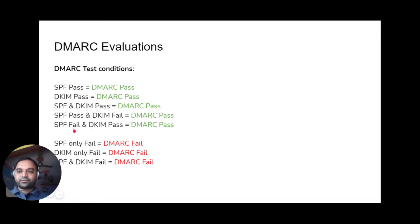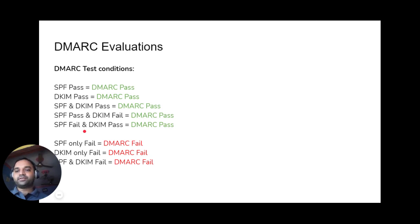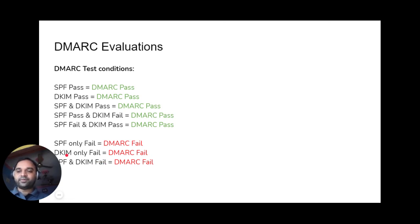Here I have shown some DMARC fail scenarios. For example, if an email only has SPF and that SPF is not on the header from address, then DMARC will really fail. Similarly, if there is only a DKIM signature and SPF is not present, and that DKIM is also failing, then DMARC will also fail. The third condition is when both SPF and DKIM are failing — then DMARC will also fail. DMARC is highly dependent on SPF and DKIM to pass. One of these — SPF or DKIM — should really pass on the from header domain for DMARC to also pass.